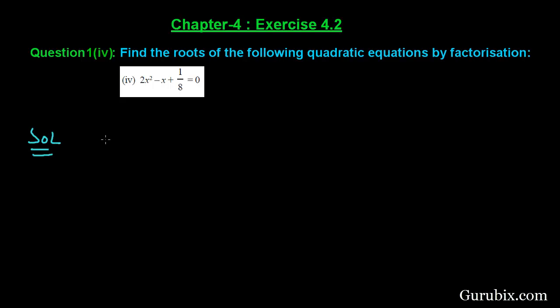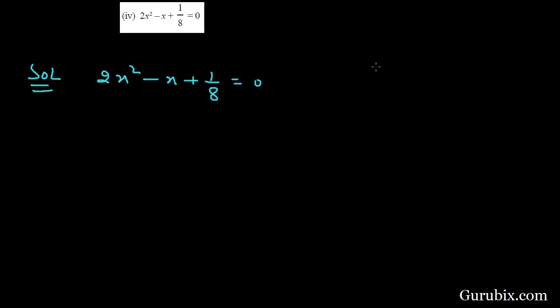First of all we shall write the given quadratic equation in its standard form, that is 2x² - x + 1/8 = 0. We shall multiply both sides by 8, then we have 16x² - 8x + 1 = 0.